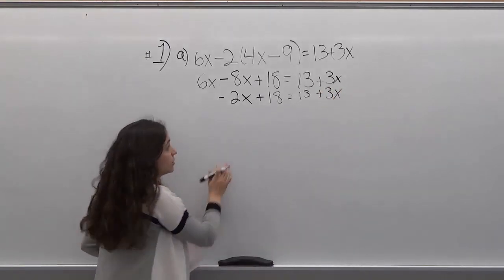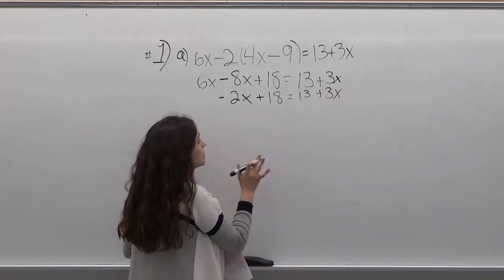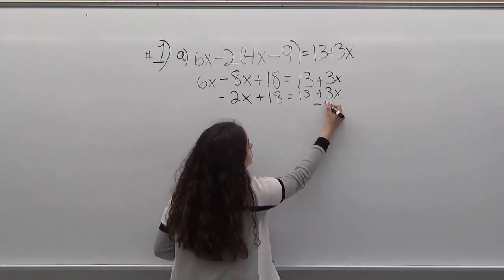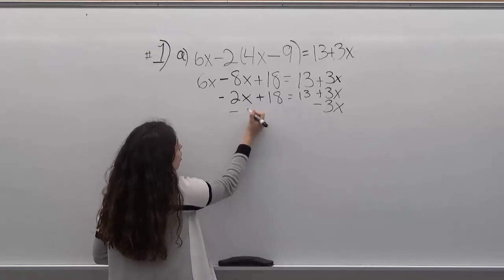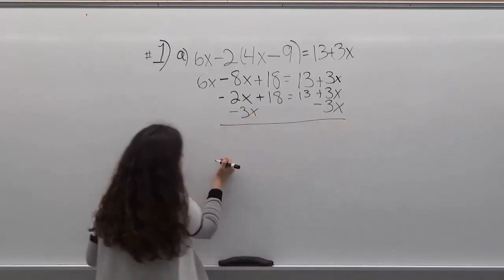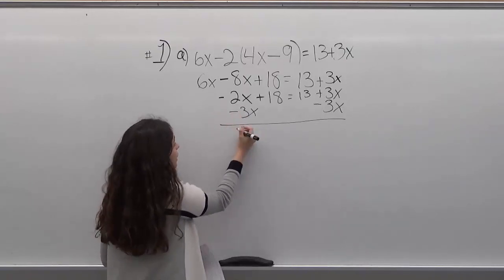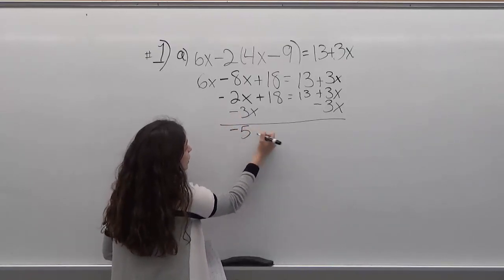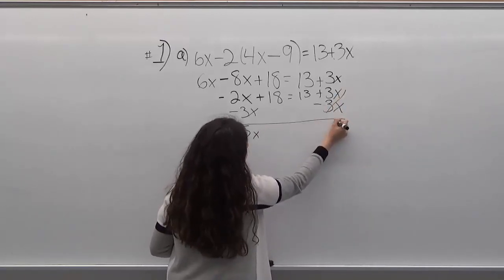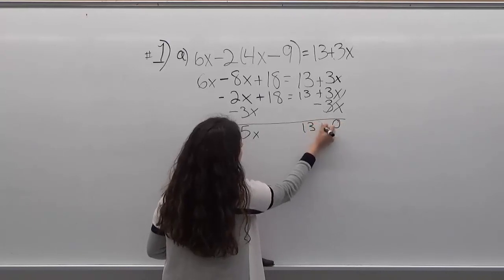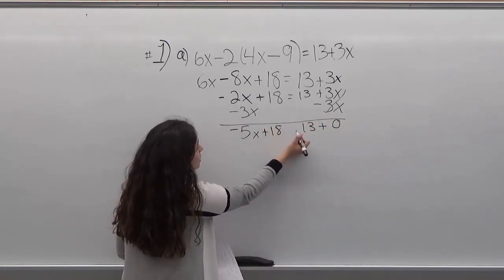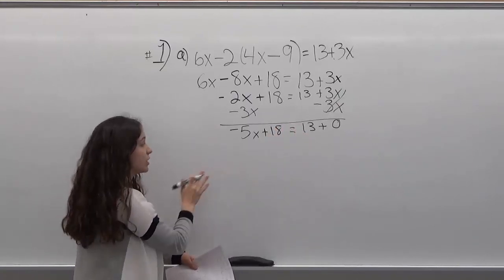So now, as I said, you want to get everything with x on one side. So I'm going to subtract 3x on both sides. Minus 2x minus 3x is minus 5x, and then on this side you're going to get 0. So minus 5x plus 18 equals 13.